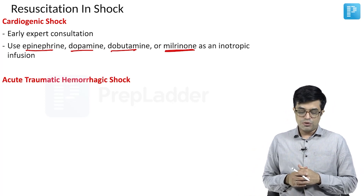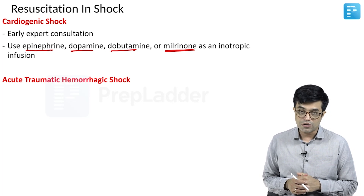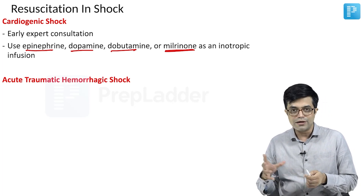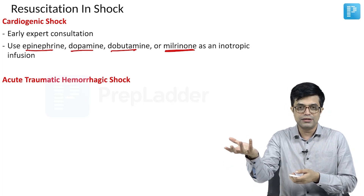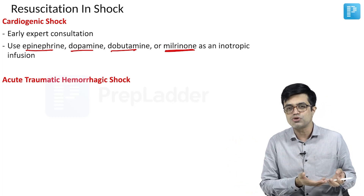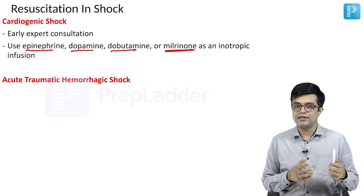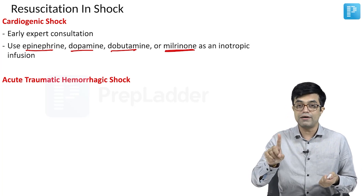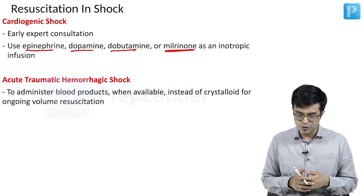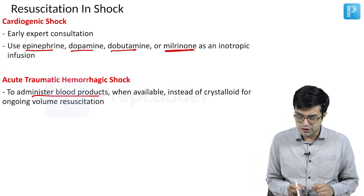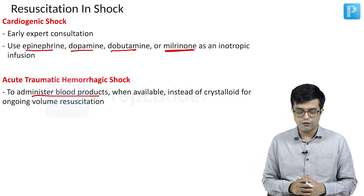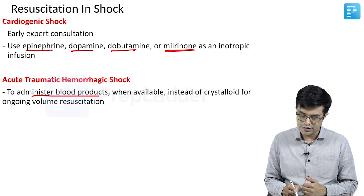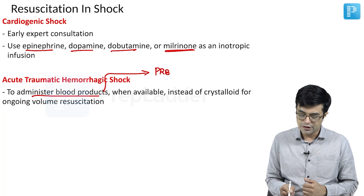When it comes to acute traumatic hemorrhagic shock, blood loss has happened. Obviously, blood won't be immediately available when the child comes, so you will have to start the patient on crystalloids. But once blood is available, blood transfusion should be preferred instead of crystalloids for ongoing volume resuscitation. PRBC transfusion is always preferred compared to whole blood transfusion.